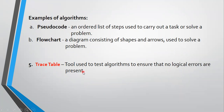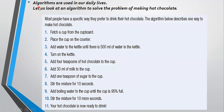Your trace table will help you test your algorithm. Now algorithms are used in our daily lives. Let us look at an algorithm to solve the problem of making hot chocolate — in our daily lives we are always solving algorithms. Most people have a specific way they prefer to drink their hot chocolate. The algorithm below describes one way to make it. This is a numbered list of instructions to solve a problem — this is actually a pseudocode.